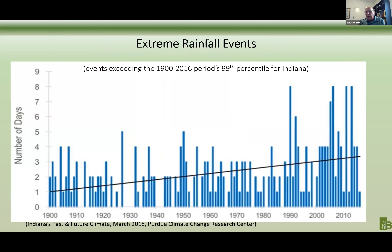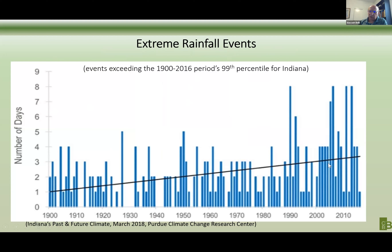More important to flooding in our areas are the number of extreme rainfall events. This is coming from the Purdue study and it shows the number of days where significant precipitation events occur. We are seeing a significant increase in those numbers, particularly in the last 20 years or so. We are seeing the number of events happening a lot more — much more significant events and much more frequently.